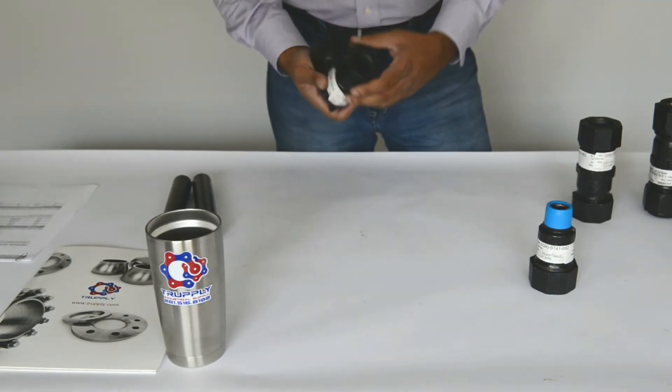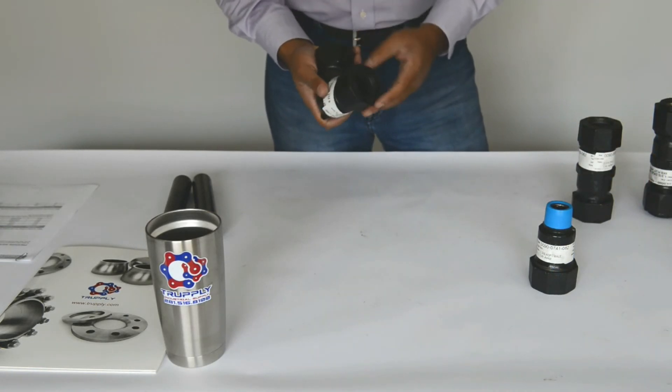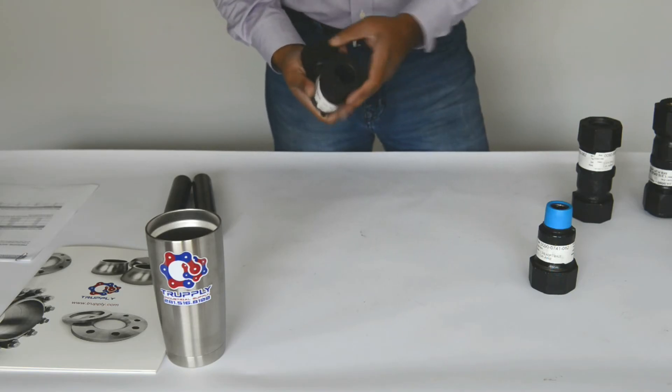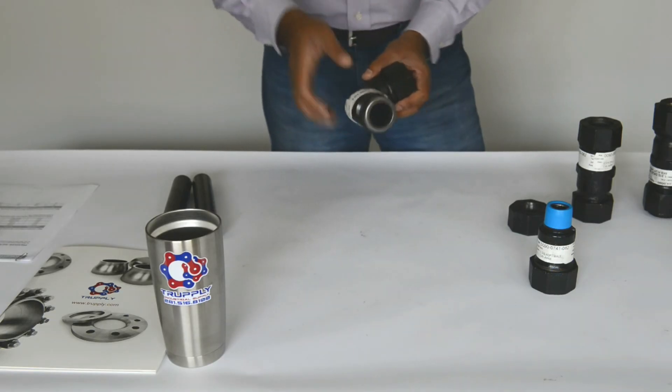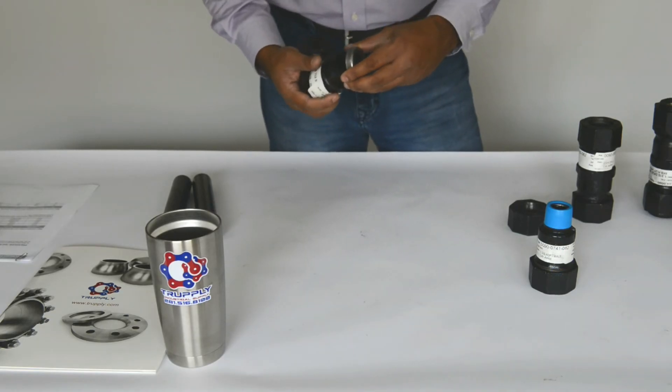This is a Style 90 compression coupling elbow. Again, it looks exactly like a regular coupling.